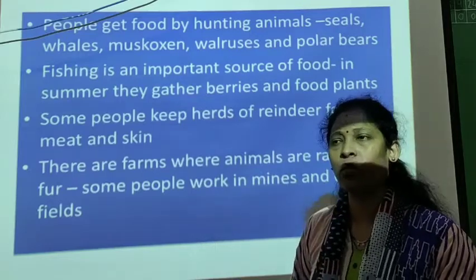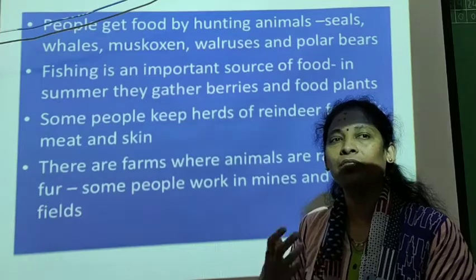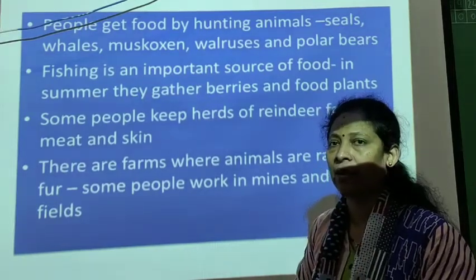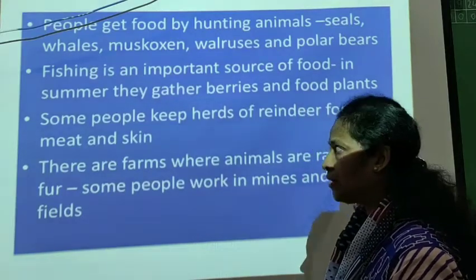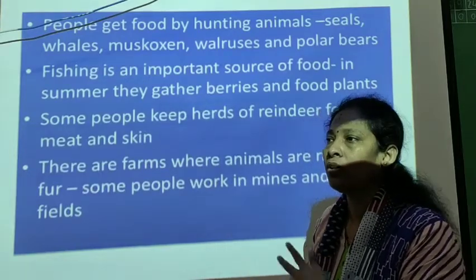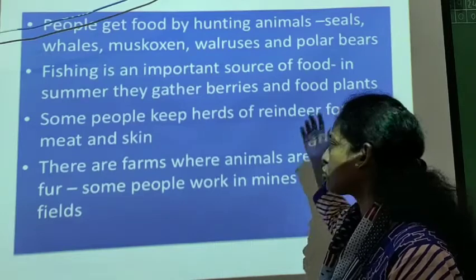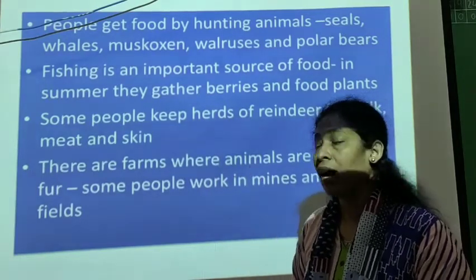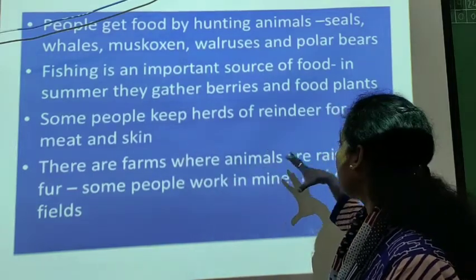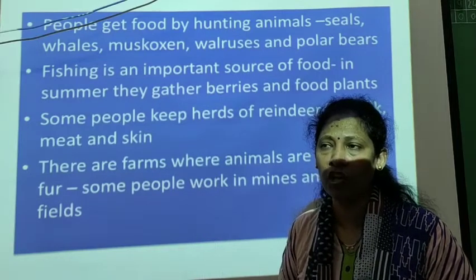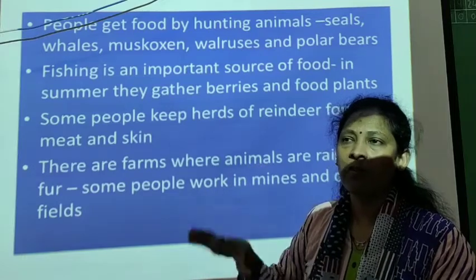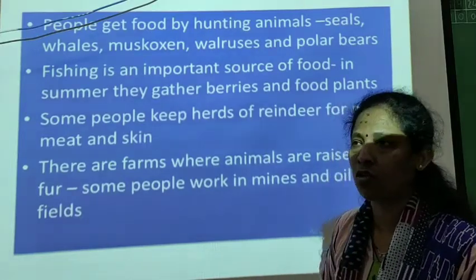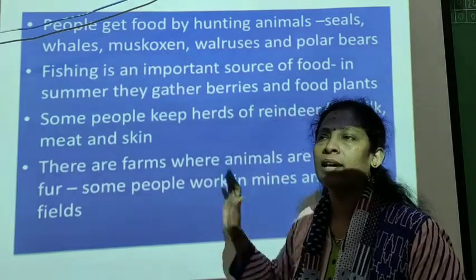Some people keep herds of domestic animals for eating, and they depend on animals for a long time. They use herd animals for multiple purposes — milk, meat, and skin. Some farms are seen in the Arctic region in the northward where they raise and look after animals. Some people even work in mines and oil fields. All these occupations can be seen in the north pole, the arctic region.